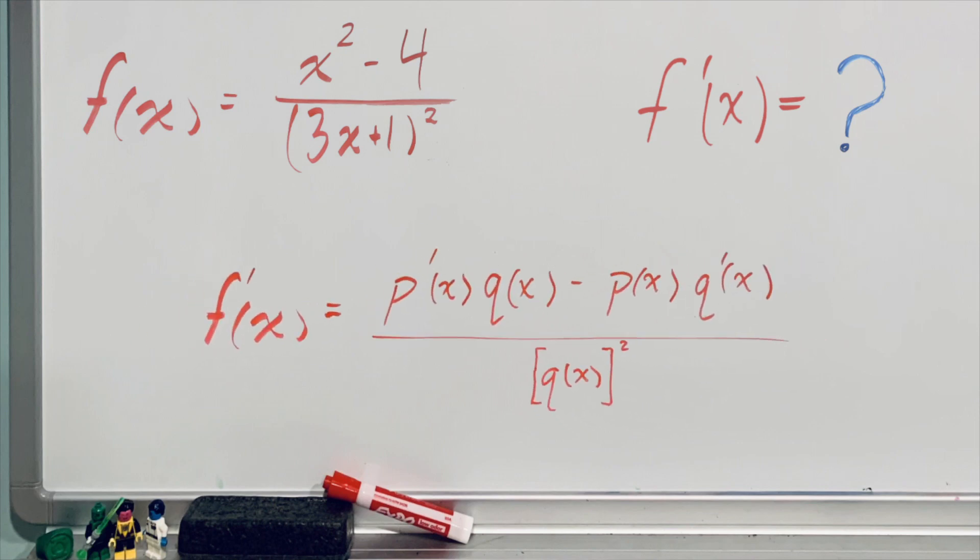If you can remember it. I always have a hard time remembering the order, and it matters since we are subtracting. This rule says the derivative of the top function times the bottom function minus the top function times the derivative of the bottom function all over the bottom function squared.